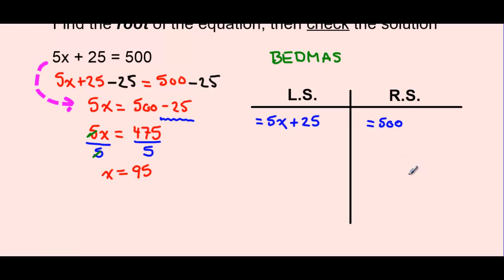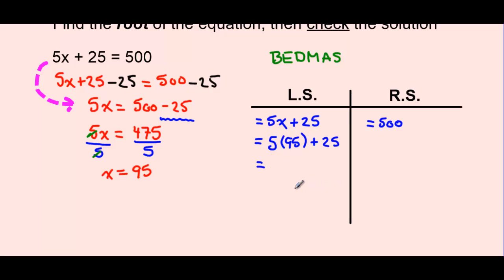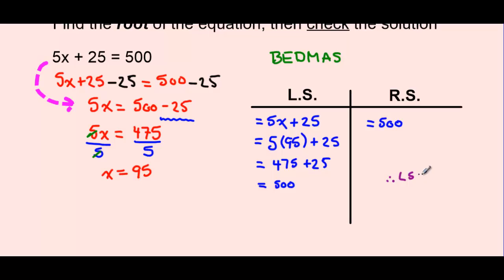The right side is already solved — it equals 500. But what happens when we put 95 in where x goes? When we substitute a number, we always put it in brackets, remembering that brackets represent multiplication. 5 times 95 equals 475 plus 25, and 475 plus 25 equals 500. The left side and the right side are both equal. So we end off our left-side right-side check by saying: therefore, the left side equals the right side.